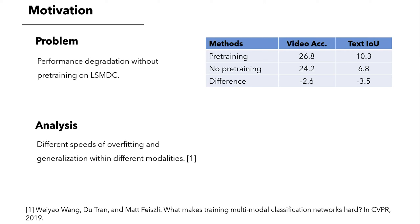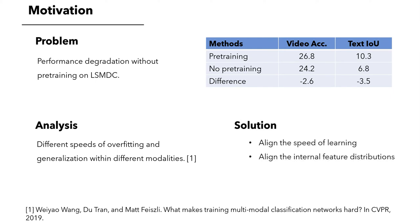We proposed two techniques to cope with this issue. The first is to align the magnitude of gradient updates, so that different sub-networks learn at similar rates. The second is to align the internal feature distributions of different modalities.